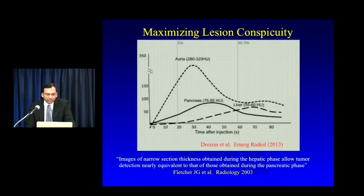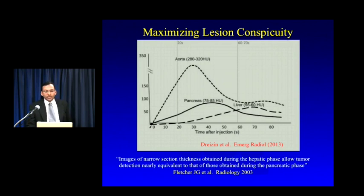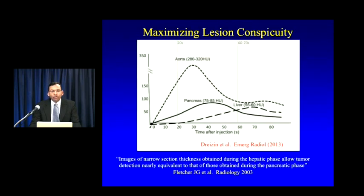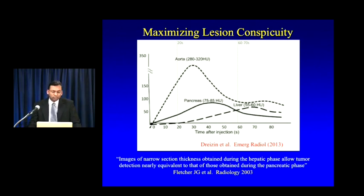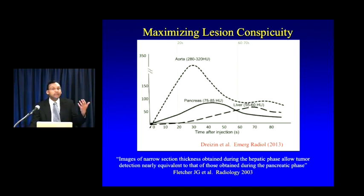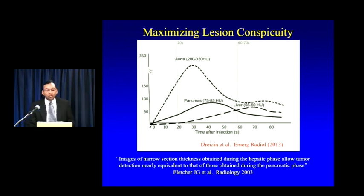This pancreatic phase could theoretically maximize detection of subtle pancreatic masses. However, Fletcher et al. in Radiology showed there wasn't much practical difference in pancreatic cancer detection between portal venous and pancreatic phase imaging, so we don't routinely acquire a third phase. We just acquire arterial and venous phases rather than scanning the patient with three or four different phases in every case.